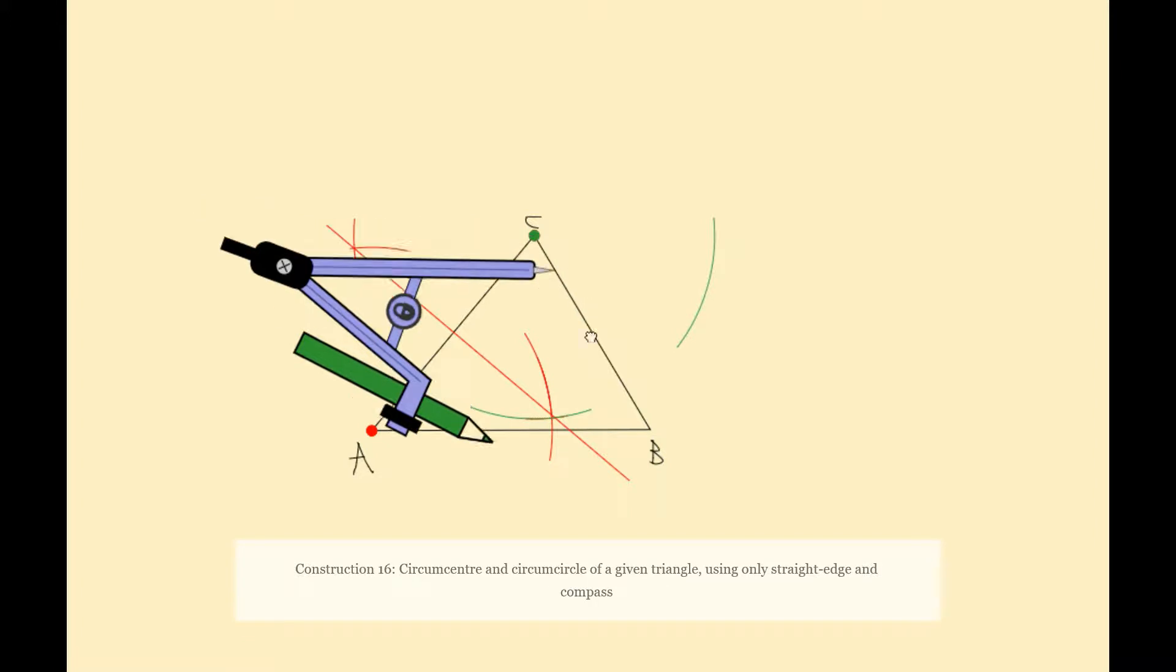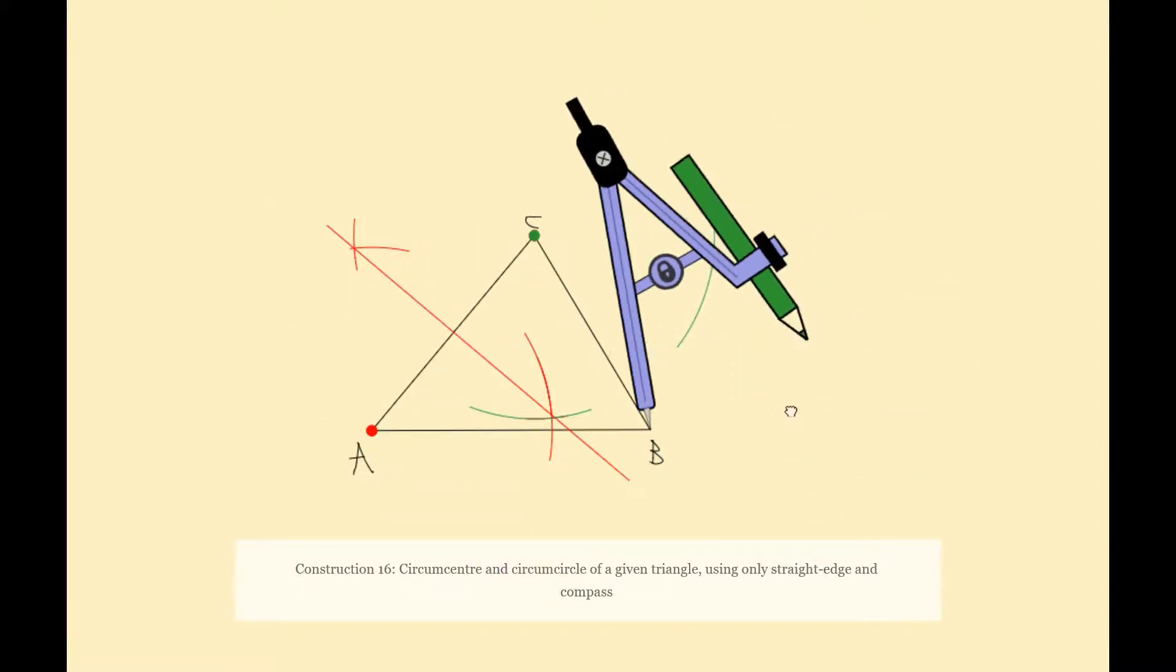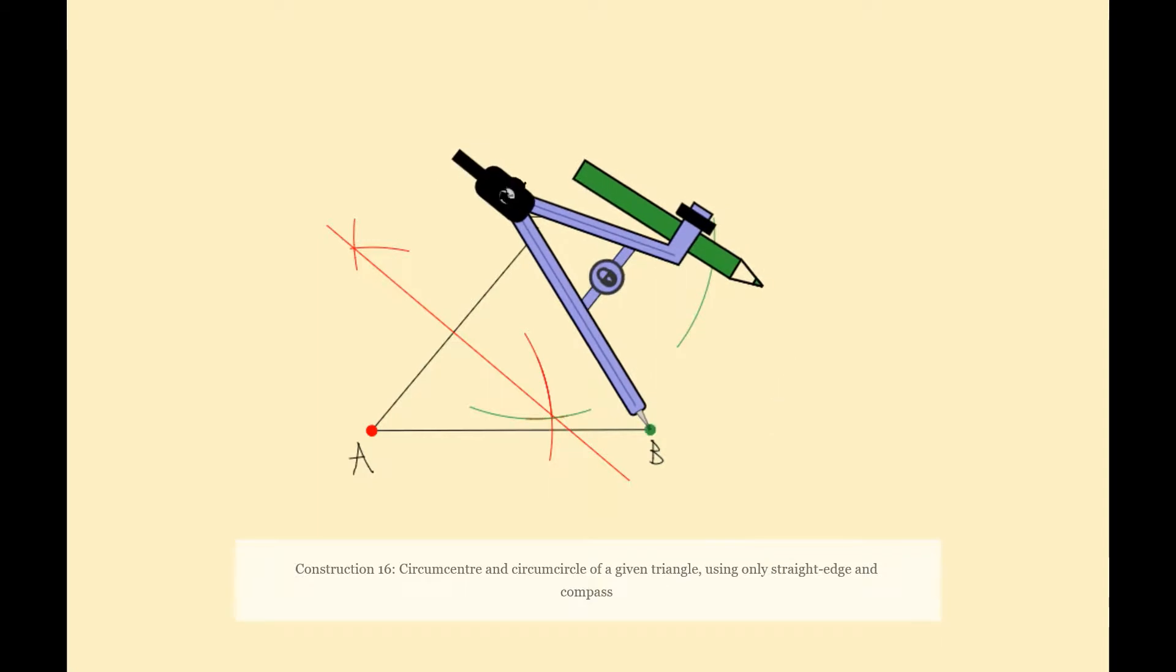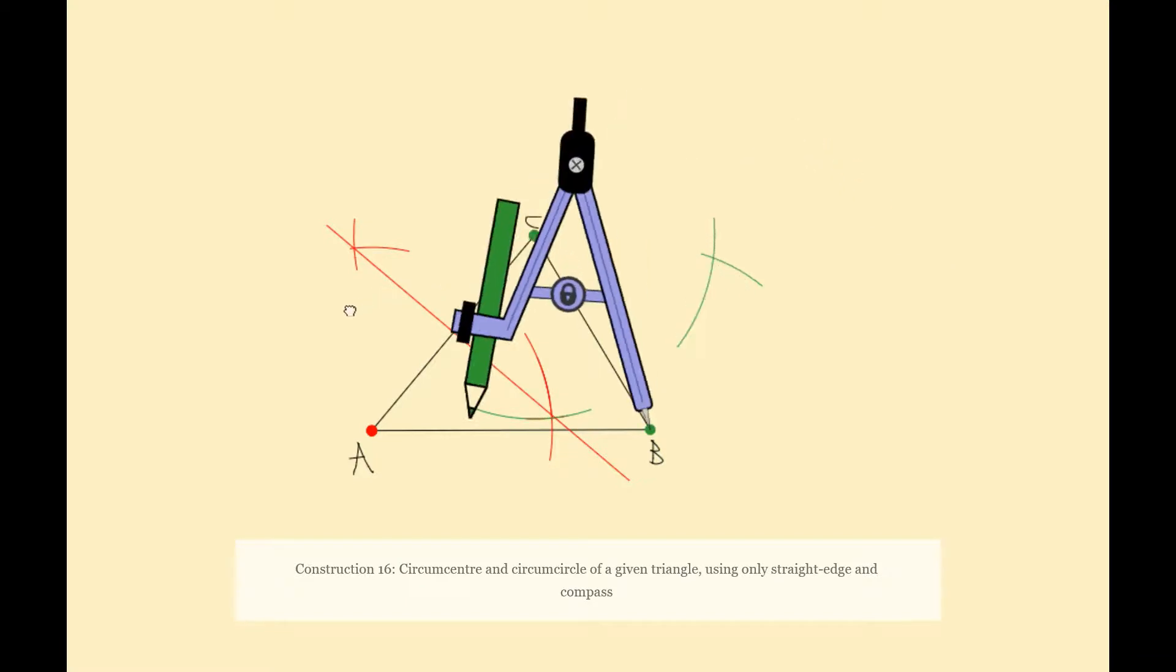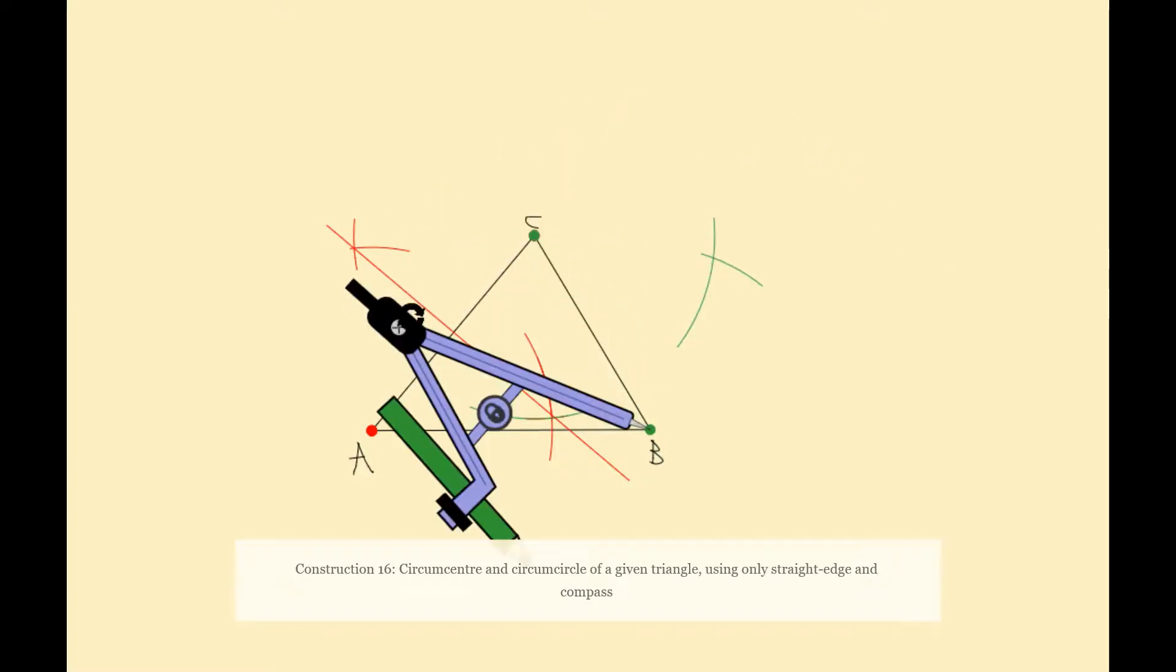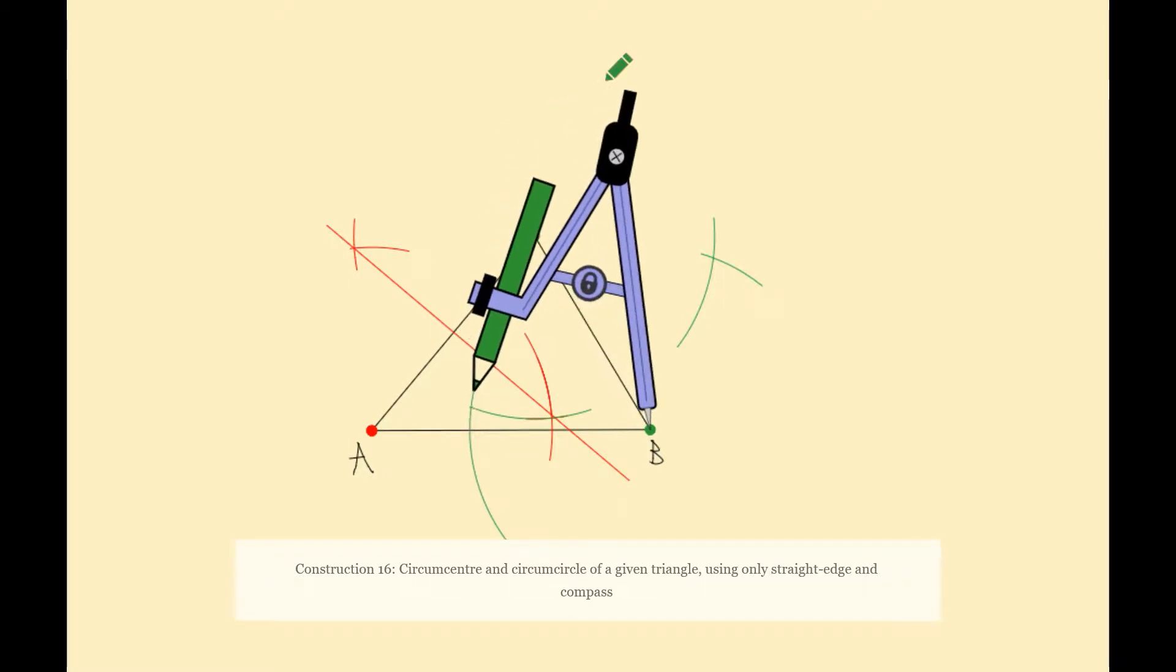I'm going to move my nib of my compass down to B and I'm going to cross those arcs. So here you can see that it will intersect my first arc and then I'll swing it around and it should intersect my second arc. Which it is just about.